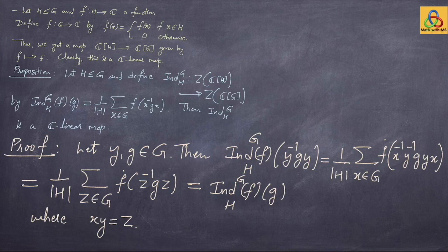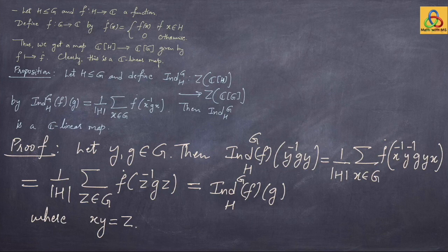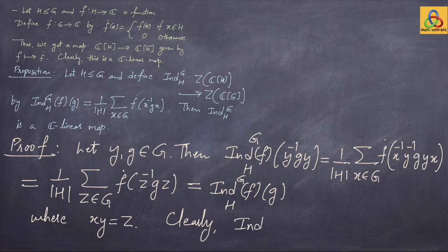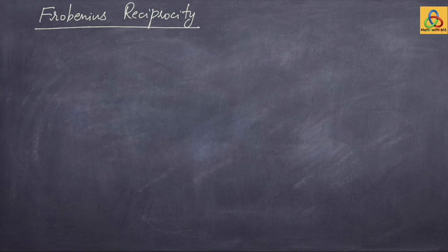The special class functions we are interested in are characters of representations. Therefore if you have a character of a representation on a subgroup H, you can extend it to a class-preserving function on the group G. It will in fact turn out to be a character of some representation coming from the representation of the subgroup. Linearity of the induction map is obvious, left as a homework. So induction is a well-defined C-linear map from the center of C[H] to the center of C[G].